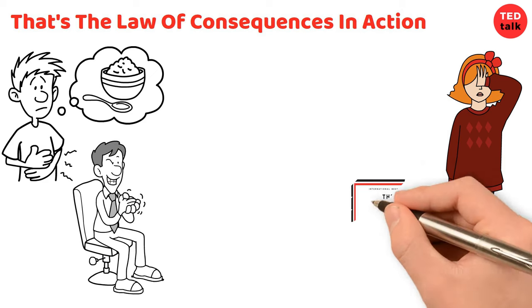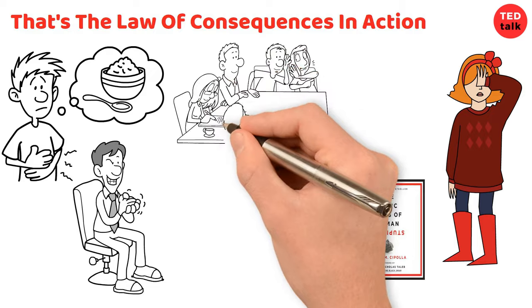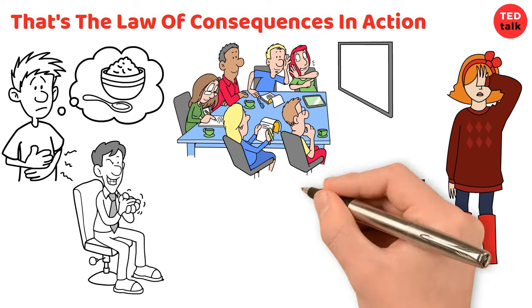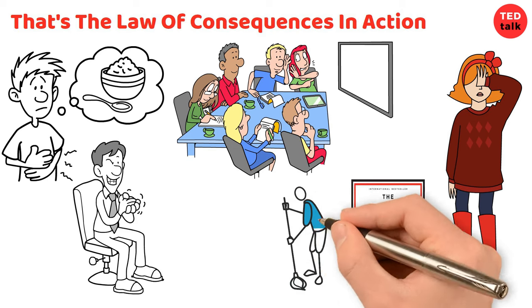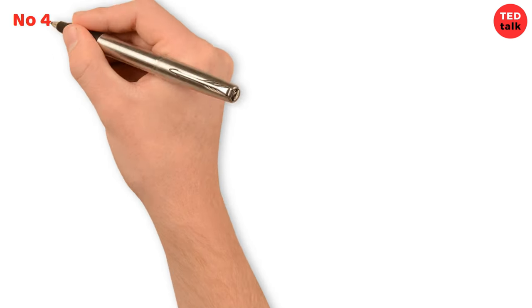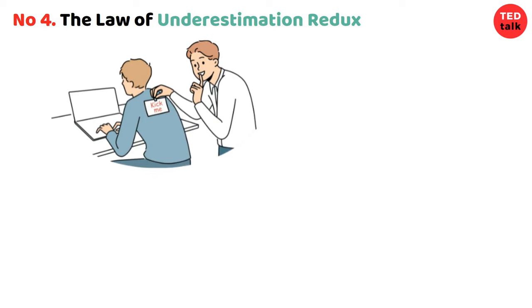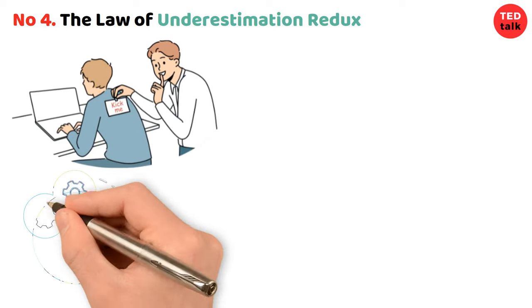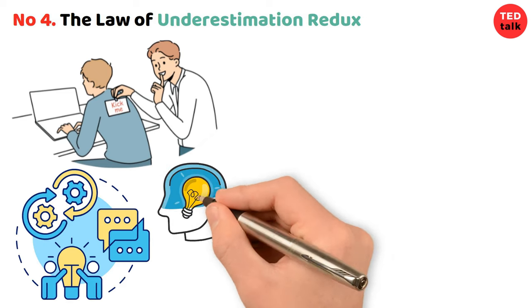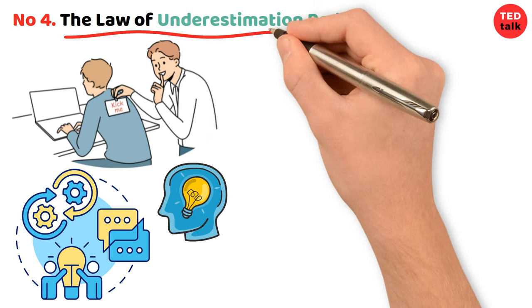So the next time you're tempted to do something silly, remember Cipolla's law of consequences. It's like a reminder to think before you act and consider how your actions might affect others. After all, nobody wants to clean up a mess or deal with the consequences of someone else's silly behavior. Number four: the law of underestimation redux. In the grand tapestry of human folly, Carlo M. Cipolla's insights shine brightly, illuminating the intricacies of our behavior.